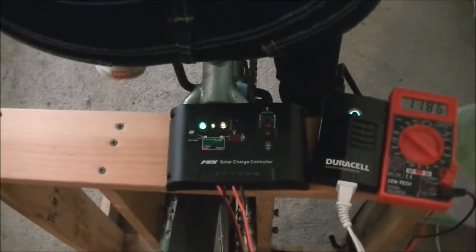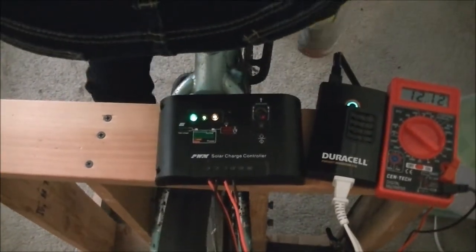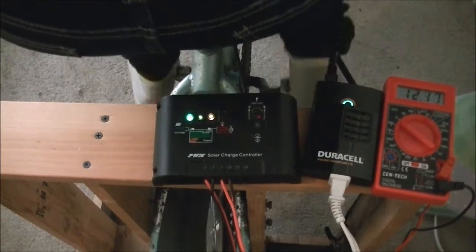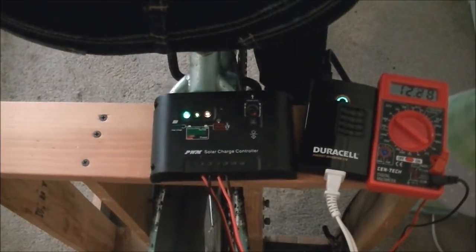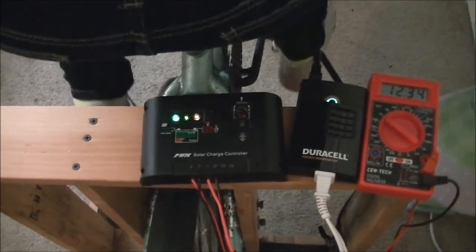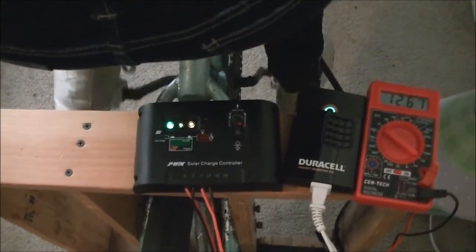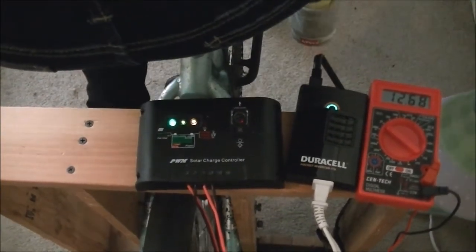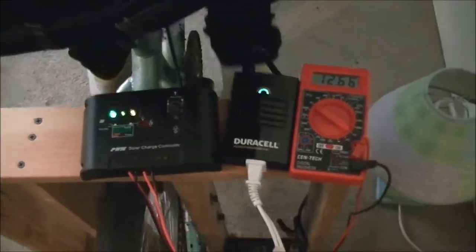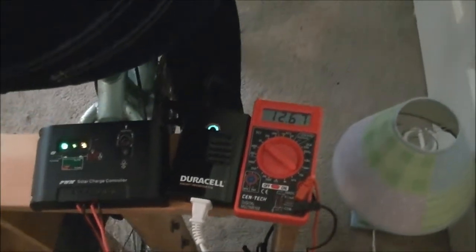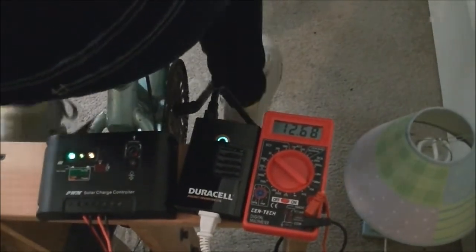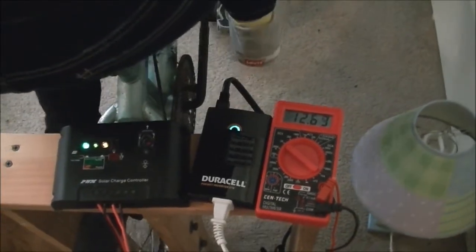When she's pedaling it, you can see that light on the left is a green light and it comes on when this thing's getting a charge, so that battery is getting charged right now. And then we can see that the green light is on on the inverter, meaning it's all powered up.